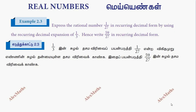Hi students, this is Alex here. Example 2.3: Express the rational number 1 by 27 in recurring decimal form by using the recurring decimal expansion of 1 by 3. So 1 by 27 equals 1 by 9 into 1 by 3.